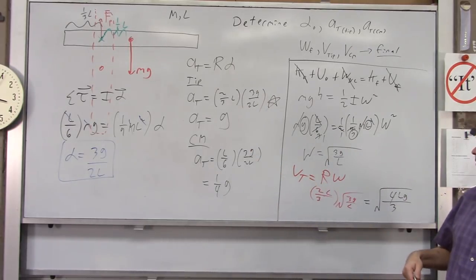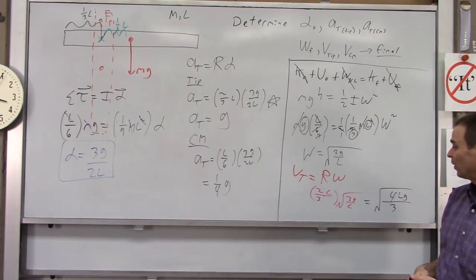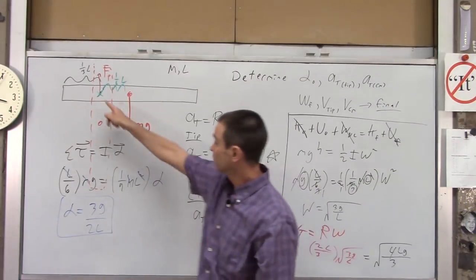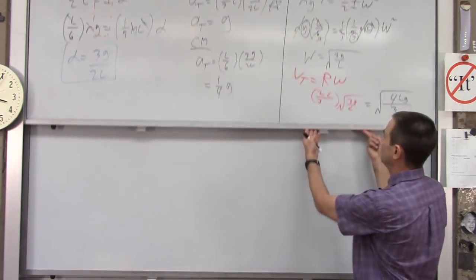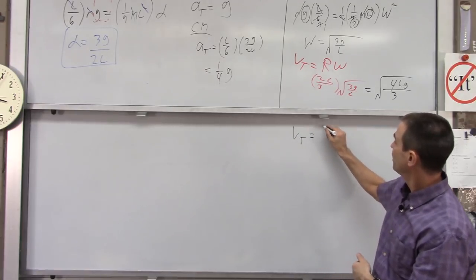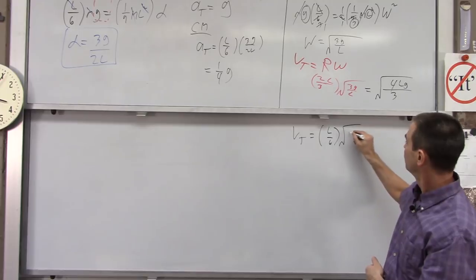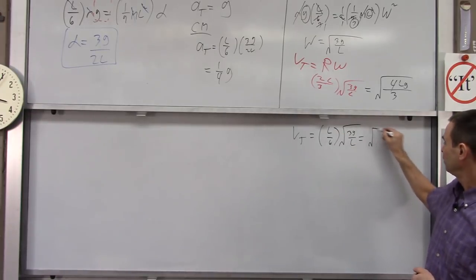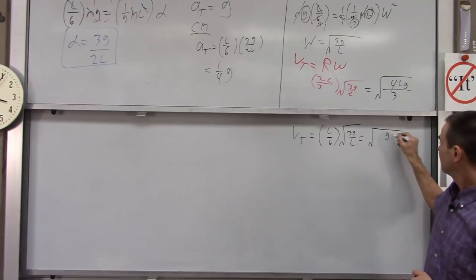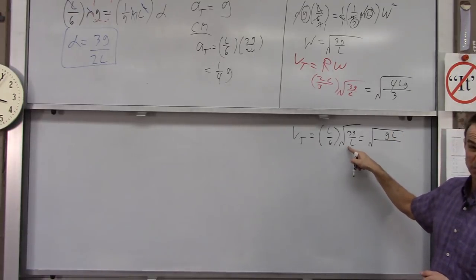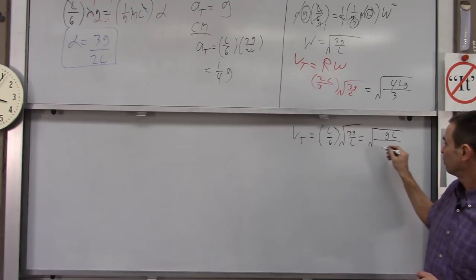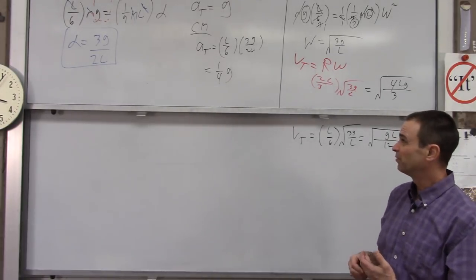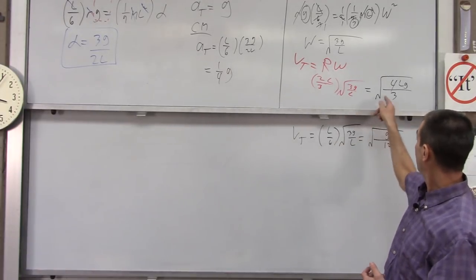For the tangential velocity of the center of mass, the process is the same but r = L/6. So v_t = (L/6) × √(3G/L). Tidying up: L² over L leaves one L, and 3/36 = 1/12, giving v_t = √(gL/12). That should be one-quarter of the tip's velocity.